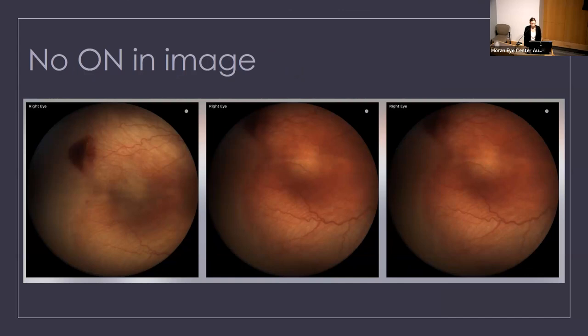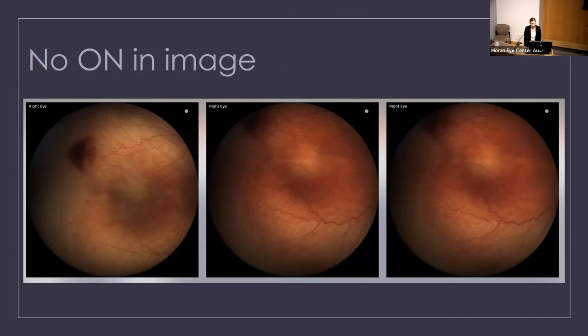Pictures were excluded where it was impossible to tell where the vasculature ends or where no reliable marking points could be set, as well as pictures where no optic nerve image was available at one of the visits. Considering we looked at three years of patients, we were only able to get seven patients that matched our criteria — a fairly low number. We included seven matched observed patients, birth-weight and age-matched, with no significant difference between groups in birth weight, gestational age, days between visits, or optic nerve size.